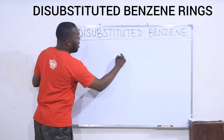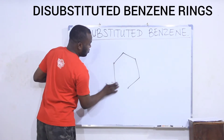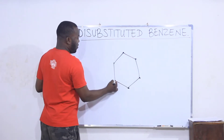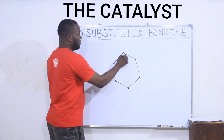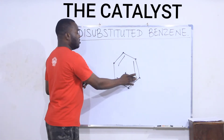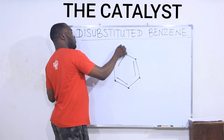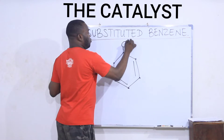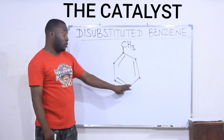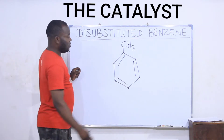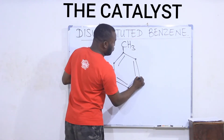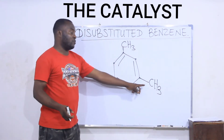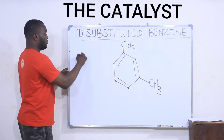For instance, if I have a benzene ring like this, I have six carbon atoms and six hydrogen atoms on the ring. If I replace one of the hydrogens here and put a methyl group, this is monosubstituted — only one hydrogen has been replaced. If I put another methyl group somewhere here, that means I remove the hydrogen here and replace it with a methyl group.